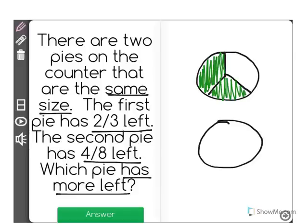And the second pie has four-eighths left. So we're going to break this into eight equal pieces and then shade in four of them to represent the amount of pie that's left. One, two, three, four. And as we can see,